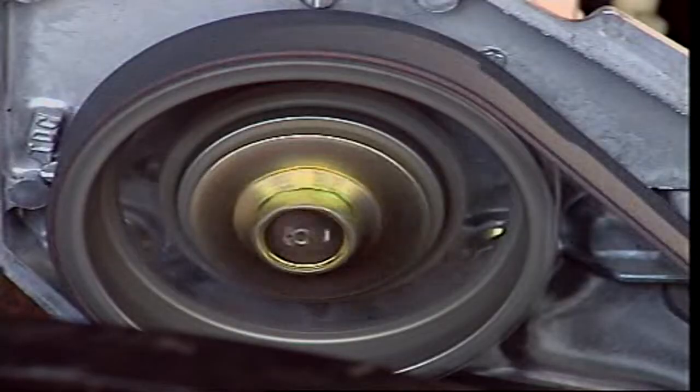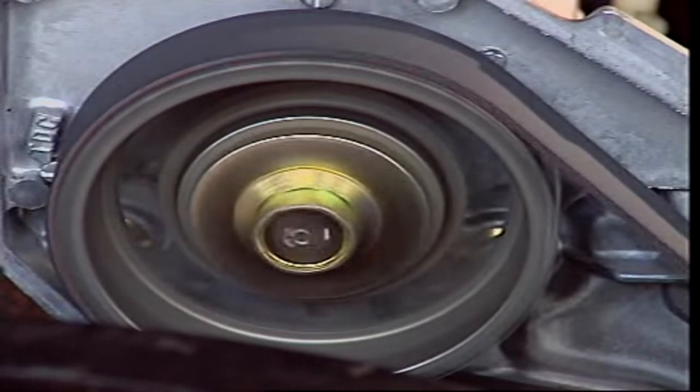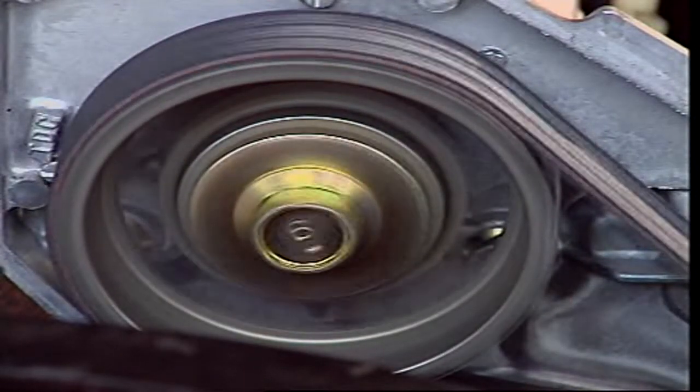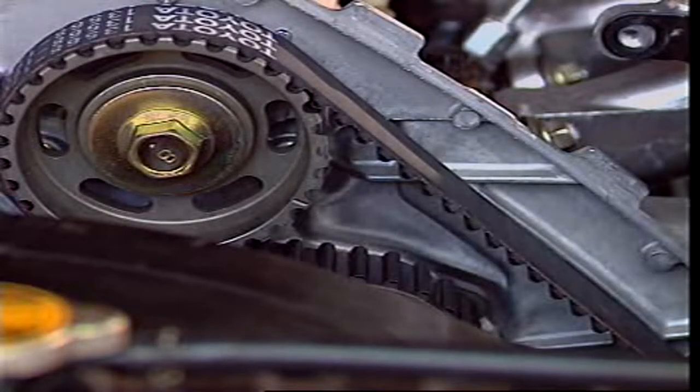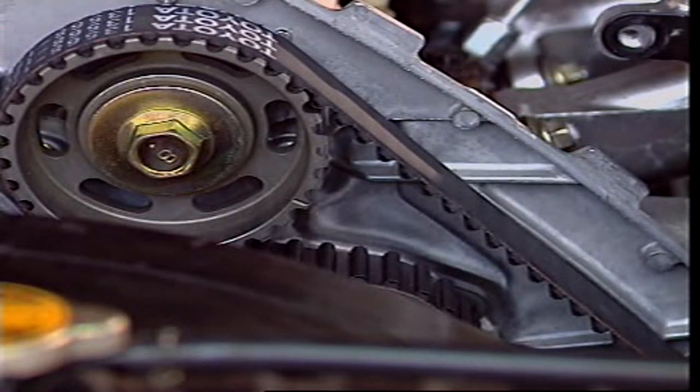The toothed timing belt is made of fiberglass or wire reinforced synthetic rubber. Its teeth match those on the crankshaft and camshaft pulleys.